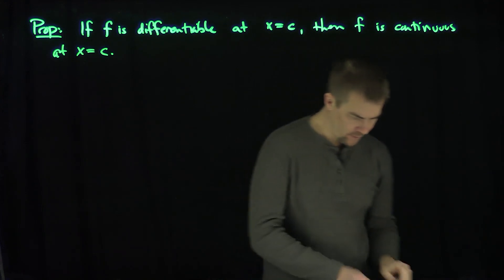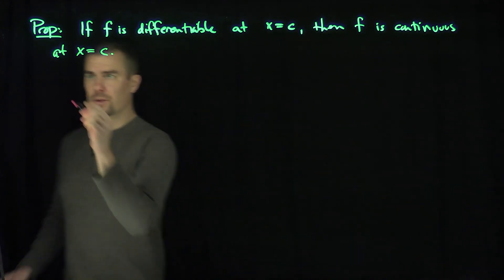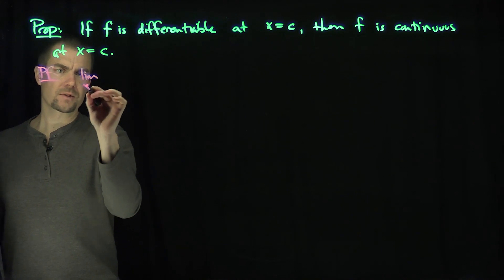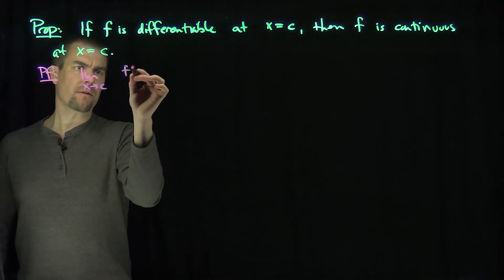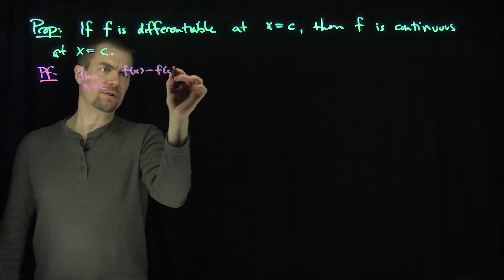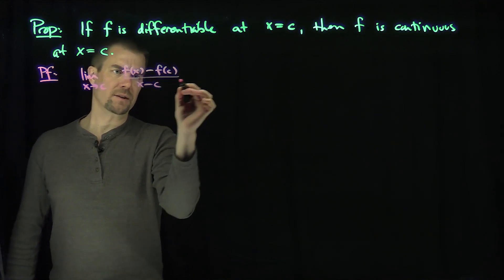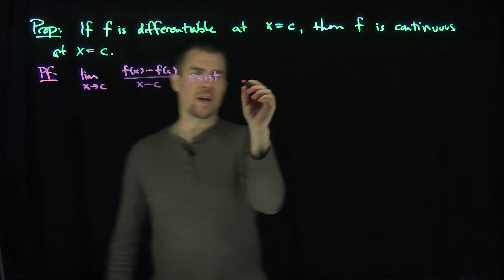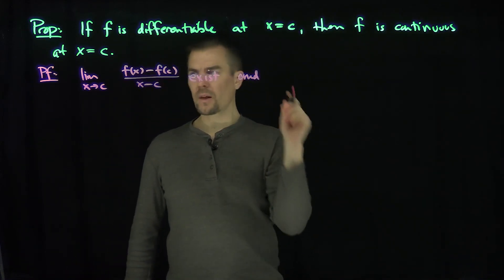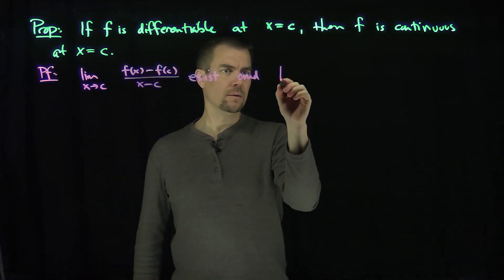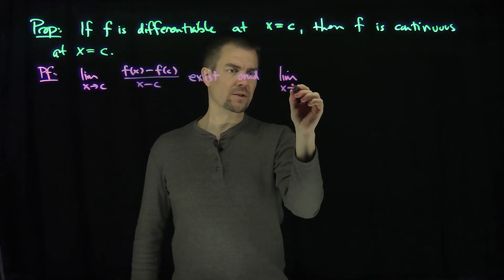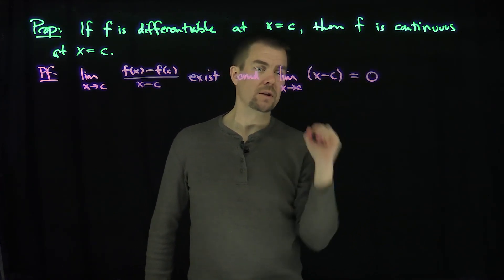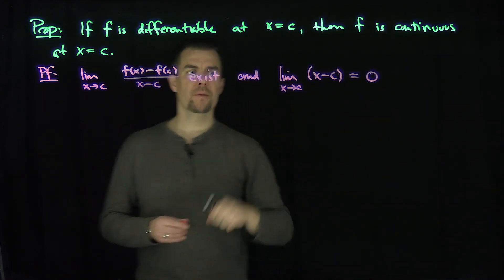So the fact that f is differentiable at c implies the following. Here's our proof for this fact. We know that the limit as x goes to c of f(x) minus f(c) over x minus c, this limit has to exist. That's one thing we know. And we also know that the limit as x goes to c of x minus c is equal to zero by continuity of function x.